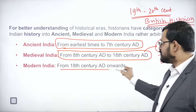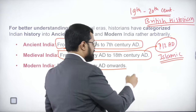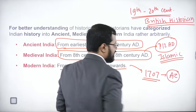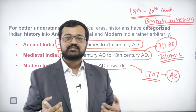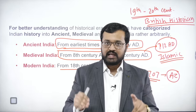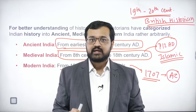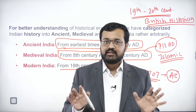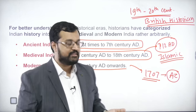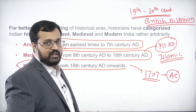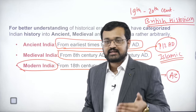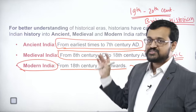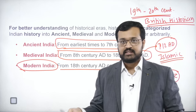The categorization colonial historians gave us on the basis of religion has now been largely refuted by us. Medieval history started from the 8th century AD because in 712 AD there was the first Islamic invasion of India by Muhammad bin Qasim, an Arab commander. That is why British colonial historians claimed that the Islamic era had begun in India. Modern India starts from the 18th century because in 1707 AD Aurangzeb died, and with him the fortunes of the Mughals and Islamic power collapsed in India. Then colonial history began entering India.